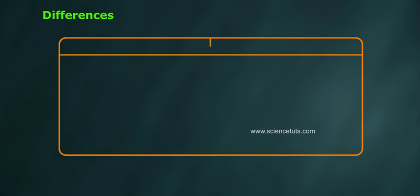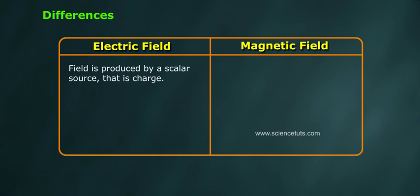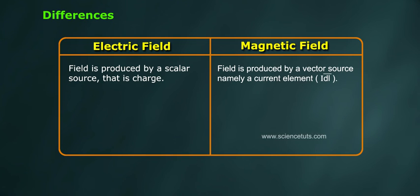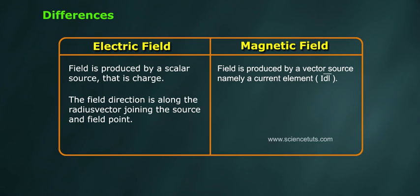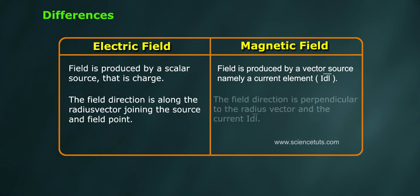Differences. Electric field: field is produced by a scalar source, that is charge. The field direction is along the radius vector joining the source and field point. Magnetic field: field is produced by a vector source namely a current element I DL bar. The field direction is perpendicular to the radius vector and the current I DL bar.